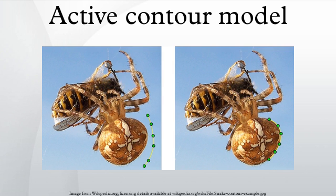The termination functional: curvature of level lines in a slightly smoothed image can be used to detect corners and terminations. Using this method, let the image be smoothed with gradient angle, unit vectors along the gradient direction, and unit vectors perpendicular to the gradient direction. The termination functional of energy can be represented accordingly. Some systems, including the original snakes implementation, allowed for user interaction to guide the snakes, not only in initial placement but also in their energy terms. Such constraint energy can be used to interactively guide the snakes towards or away from particular features.